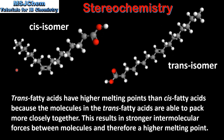The trans isomer has a higher melting point than the cis isomer because the molecules in the trans fatty acids are able to pack more closely together. This results in stronger intermolecular forces between the molecules and therefore a higher melting point.